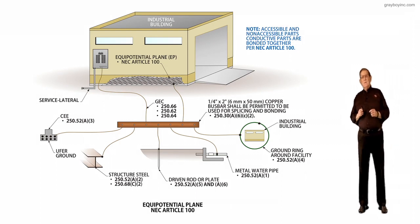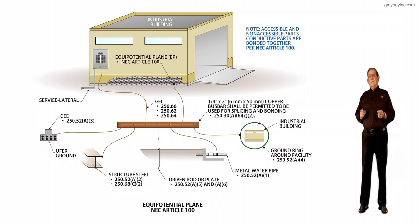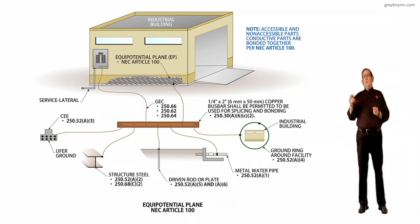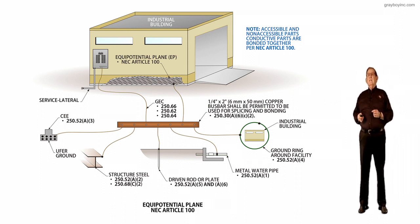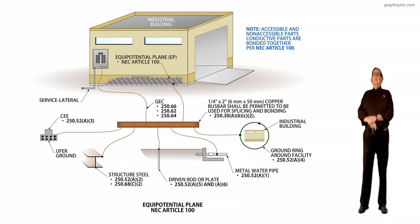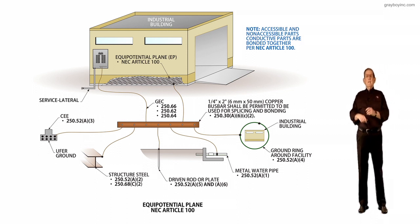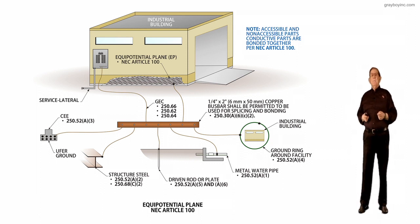This illustration deals with equal potential planes. NEC Article 100 defines it. First, I'd like to point out in the note to the right-hand side of the illustration that accessible and non-accessible parts, conductor parts that are conductive, are bonded together for Article 100 to create an equal potential type plane.